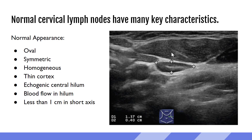We can see the sternocleidomastoid muscle here, the strap muscles, and the carotid artery. This is our lymph node. Right in the center is this very echogenic area — a line through the middle. This is the echogenic central hilum that we talk about. It's made of fat, so it has a very bright appearance on ultrasound. Around it is a more hypoechoic cortex — thin, homogenous, symmetrical — surrounding that echogenic central hilum. This is what we expect to see.